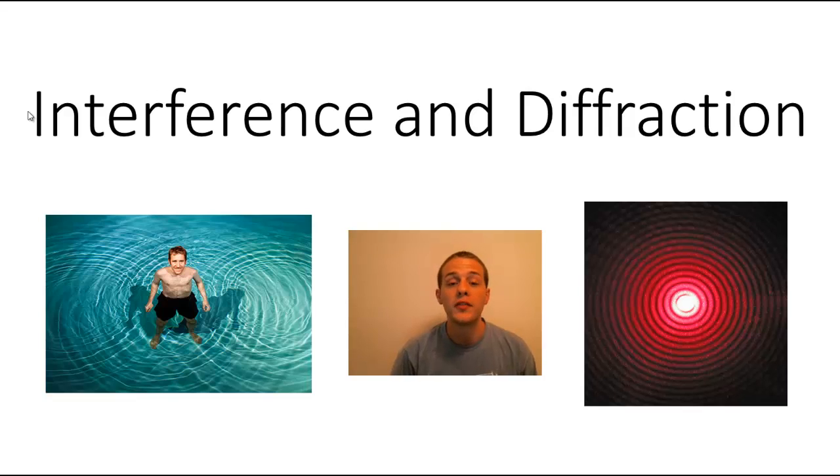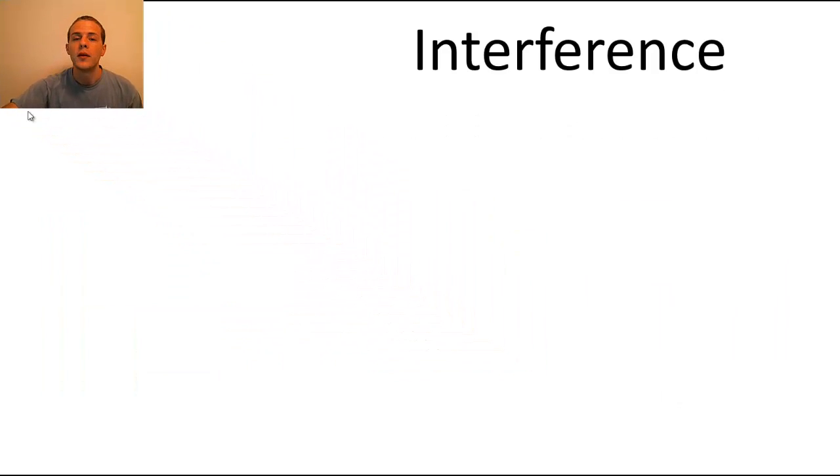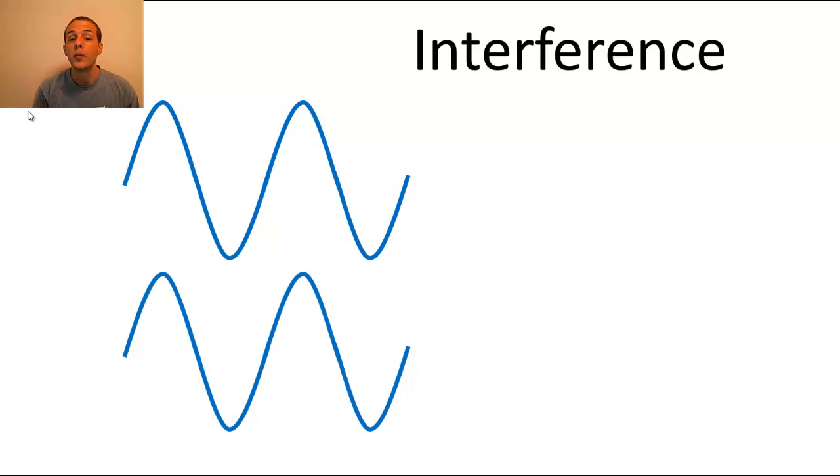So we're going to start things off by talking about interference. Interference is a phenomenon that occurs when two waves interact with one another. Suppose we have two waves coming together and those two waves have overlapping crests and overlapping troughs. These types of waves are what we call in phase.